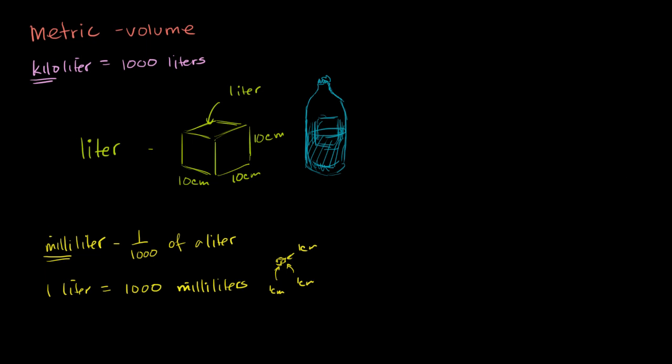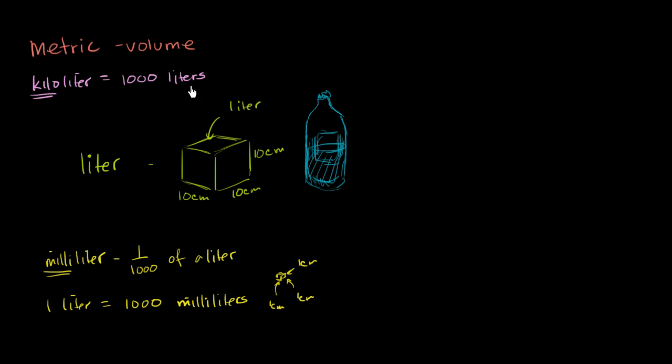And if you want to visualize this, this actually isn't as large as you might assume it to be. If you just take a cube—instead of each dimension being 10 centimeters, if you were to take a cube where each dimension is exactly 1 meter, so 1 meter deep, 1 meter wide, and 1 meter tall—this volume is equivalent to 1 kiloliter.